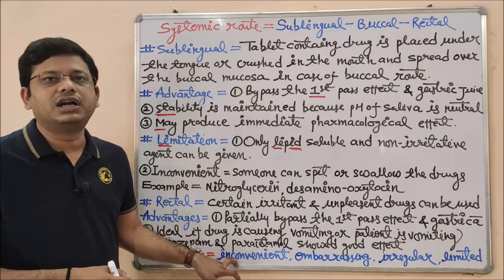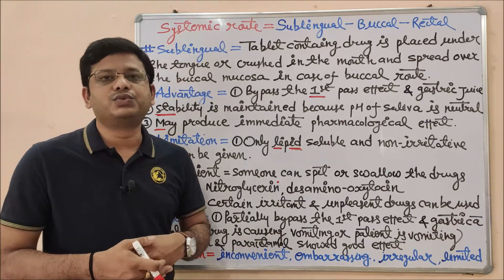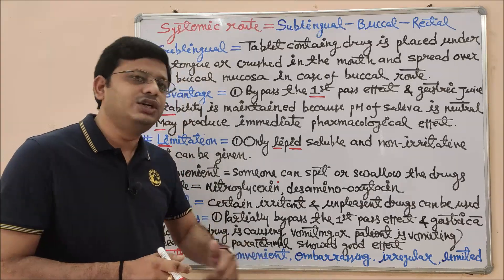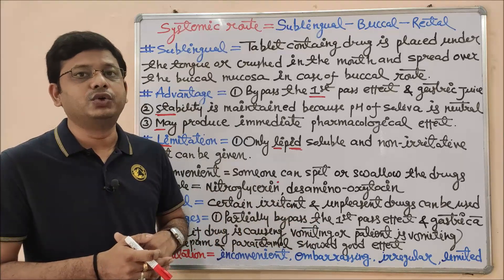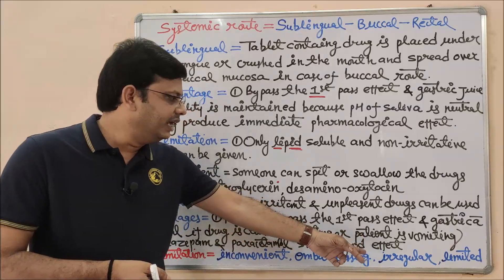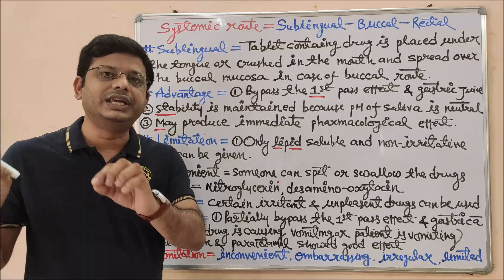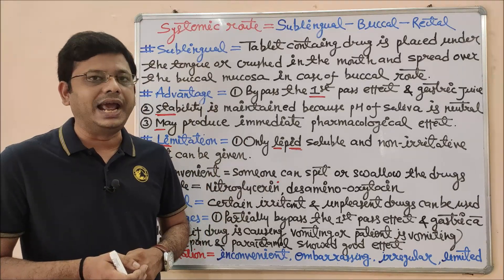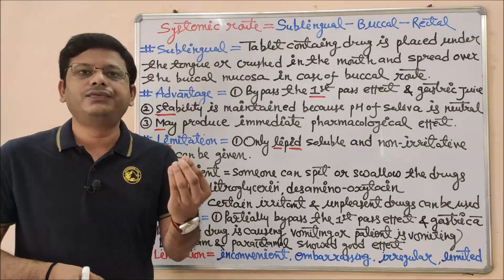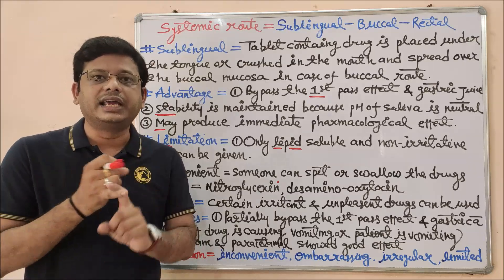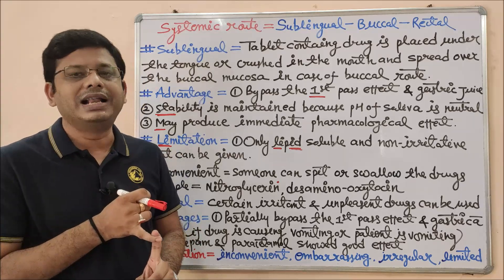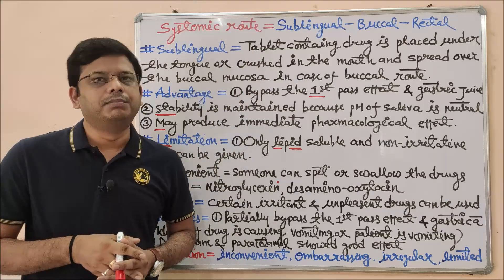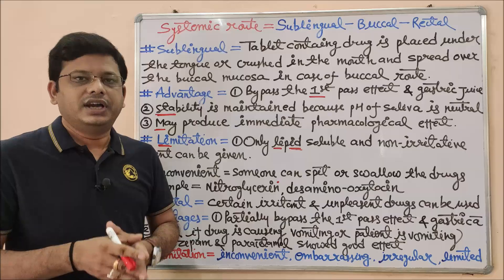Now the limitations of rectal route: it is very inconvenient to introduce a suppository via this route — it is irritating, embarrassing, and very difficult to self-administer. The effect of the drug is also irregular — not constant for all patients or even for the same patient every time, so we cannot completely rely on its accuracy. Additionally, there are very limited drugs available for this route, such as those used for treatment of piles, hemorrhoids, infections, and certain enemas.